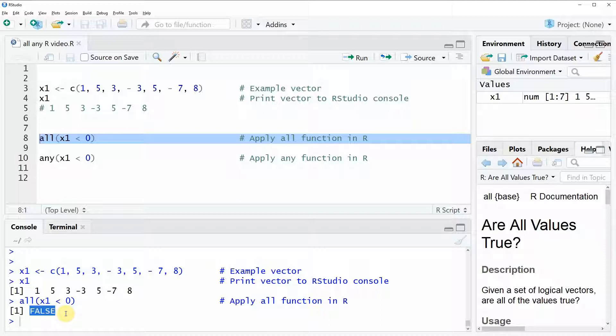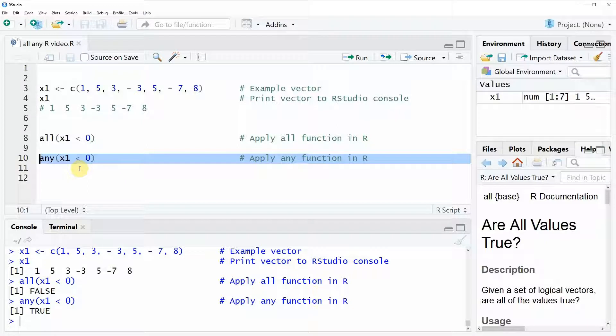However, now we might want to know if any of our values in the vector x1 are below zero and this is what we can check with the any function as you can see here in line 10 of our code. So if you run this line of code you can see that the RStudio console returns the value true. So in other words at least one of the values in our vector x1 are below zero.